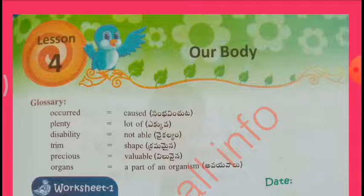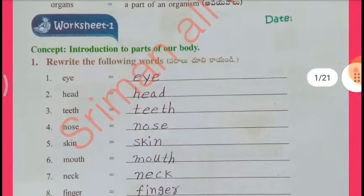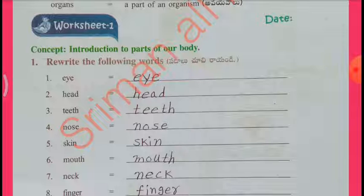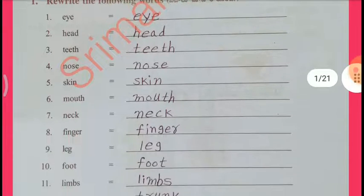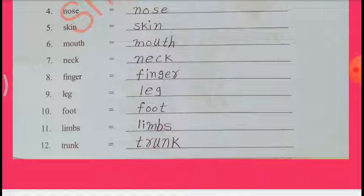Worksheet 1, Concept: Introduction to Parts of Our Body. Rerate the following words: Eye, Head, Teeth, Nose, Skin, Mouth, Neck, Finger, Leg, Foot, Limbs, Trunk.